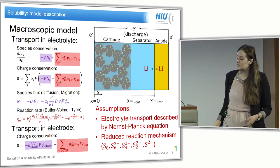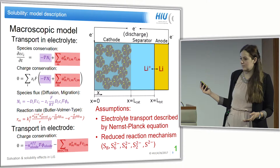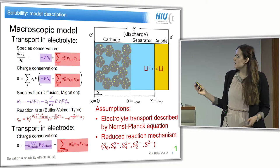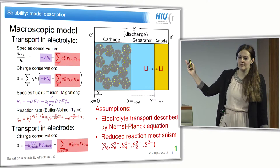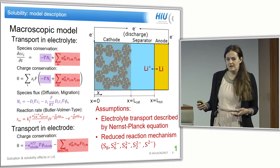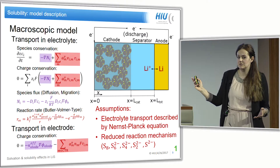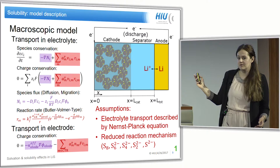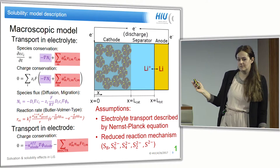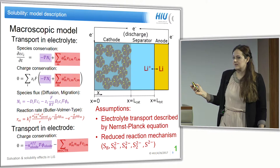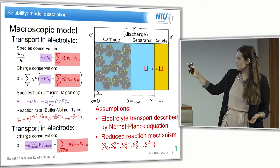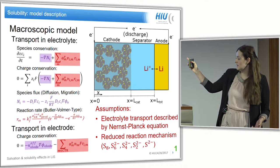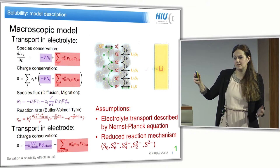Let's start with particle nucleation. We apply the macroscopic cell model based on porous electrode theory. We calculate mass and charge conservation equations for transport in the electrolyte, split into a diffusion part and a reaction part. Transport of charged species is described by a Nernst-Planck equation, while the reaction is described with a Butler-Volmer type reaction rate. We also calculate the charge conservation equation in the solid phase. We consider five sulfur species from S8 to S, and calculate for each species the set of equations discretized through the cell.